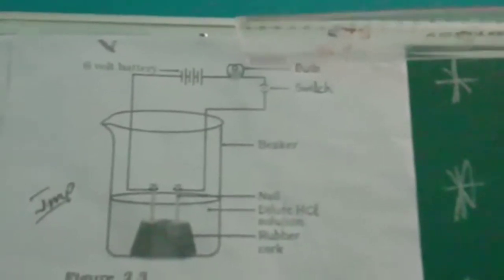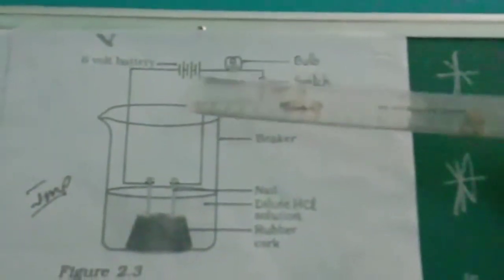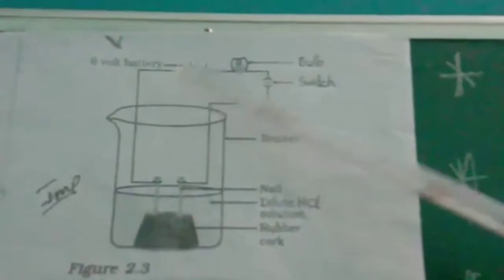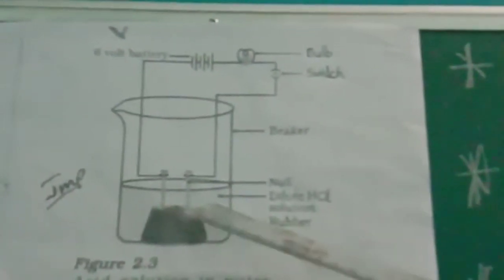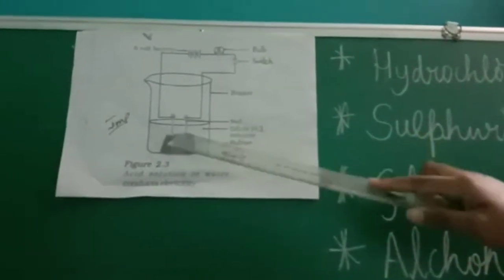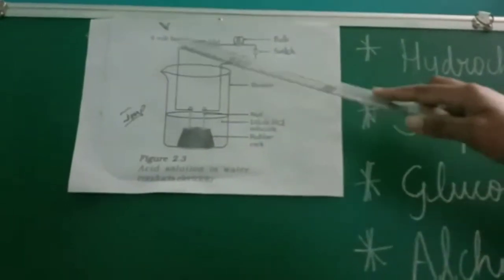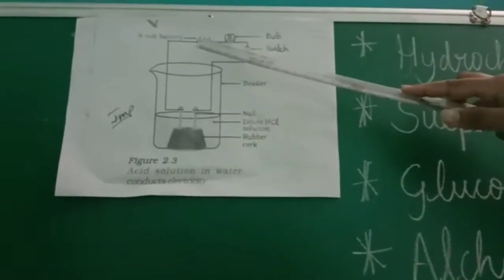The other end of the switch is connected to a bulb. And the other end of the bulb is connected to one more end of the battery. So, this is a battery, this is a bulb, and this is a switch. The solution poured inside is hydrochloric acid. Two nails are fixed — one nail is connected to one end of the battery, and the other nail is connected to the other end of the battery.